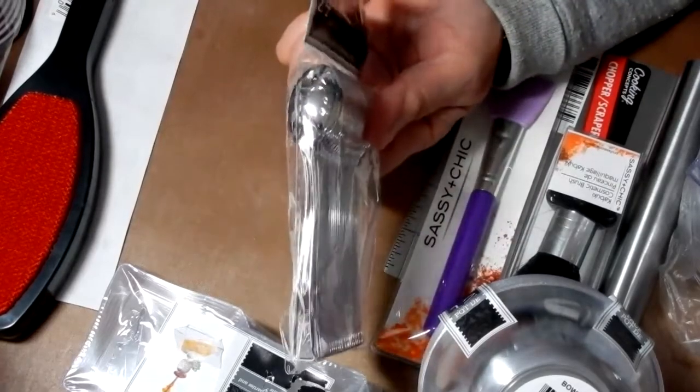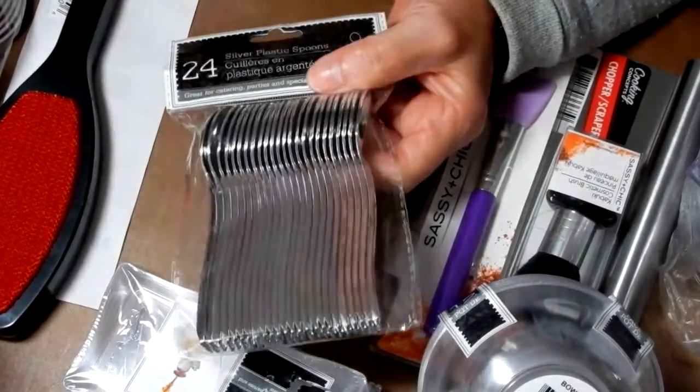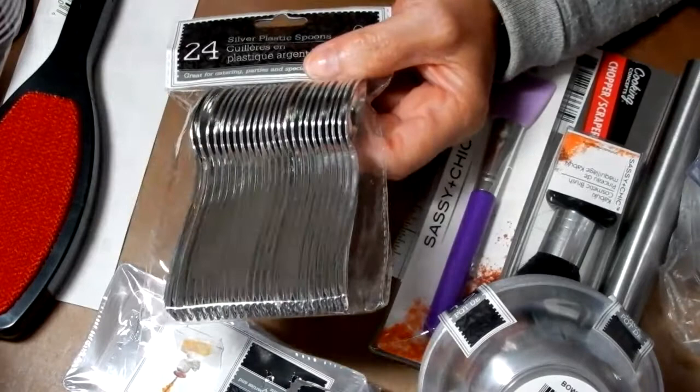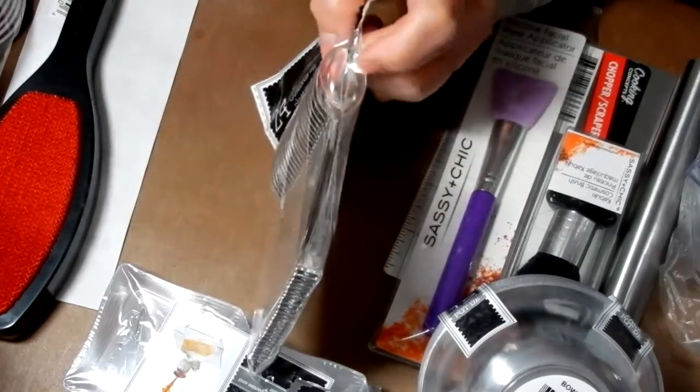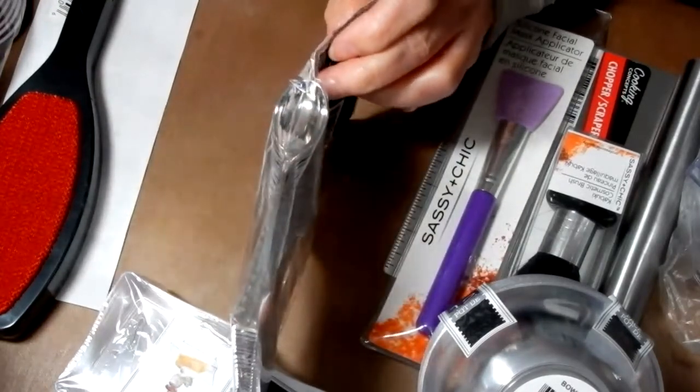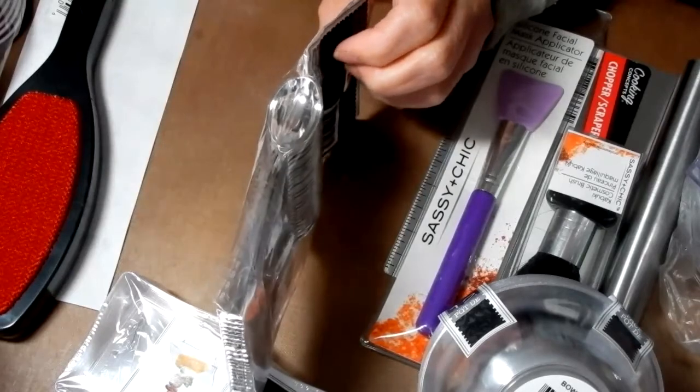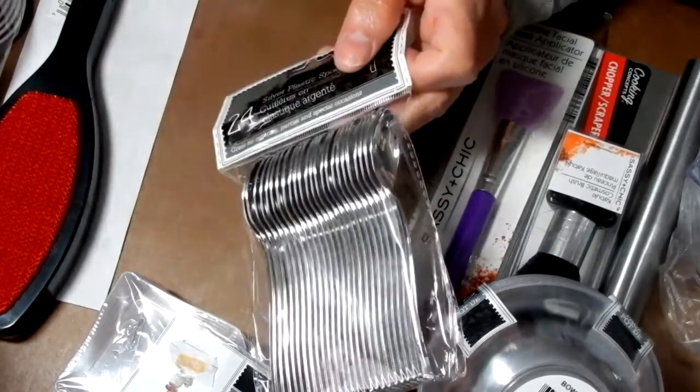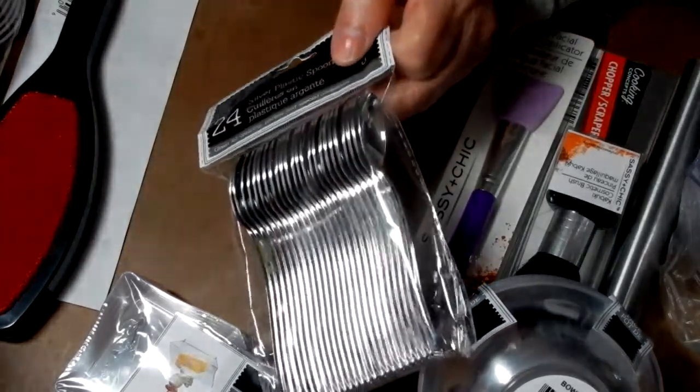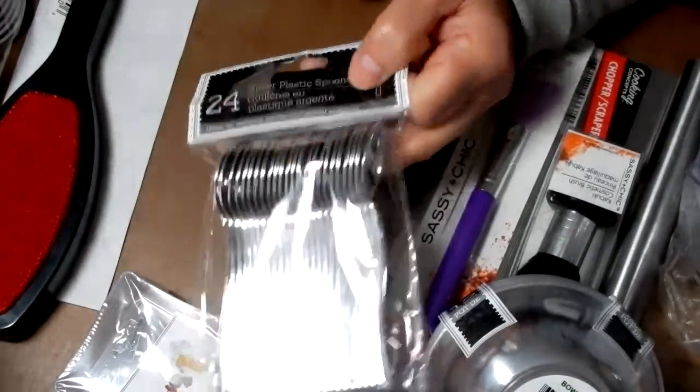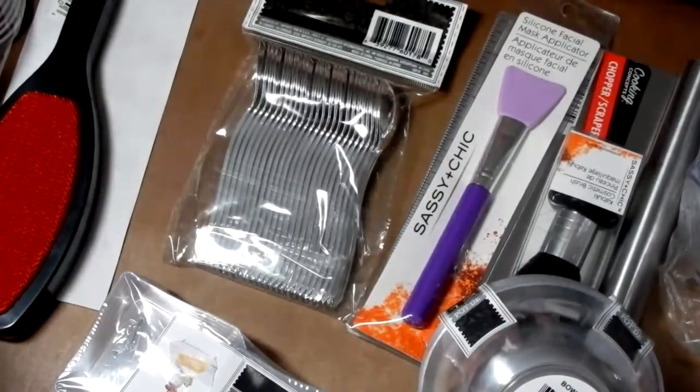And then I got these. They're just little plastic spoons. There's 24 of them. And I thought they could come in handy, mixing liquid polymer clay, or I don't know. I'm going to try them with resin, see how they work, but all pretty cool.